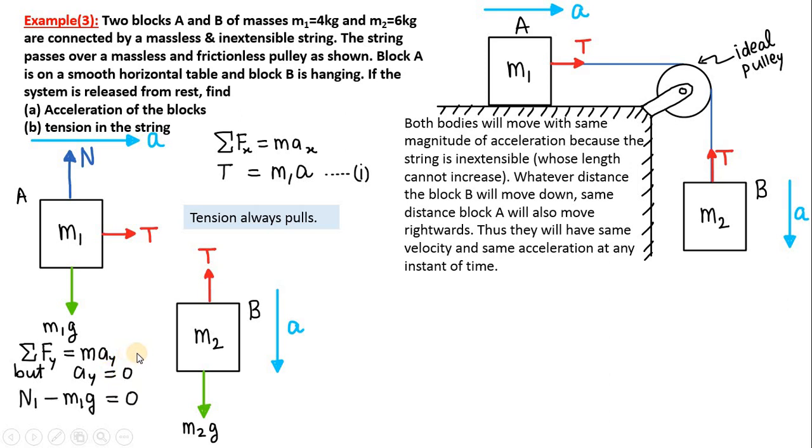So we will write down that total force in the y direction will be N minus M1 G = 0. Here N and N1 are both the same thing, so the normal reaction will become M1 G. So normal reaction is equal to the weight of the object here.